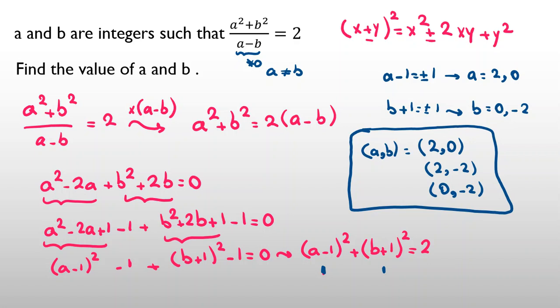Let me write another homework for you. Try to solve as homework: a cubed plus b cubed over a minus b equals 3. a and b again are integers. Try to solve this and comment your answers right below this video.